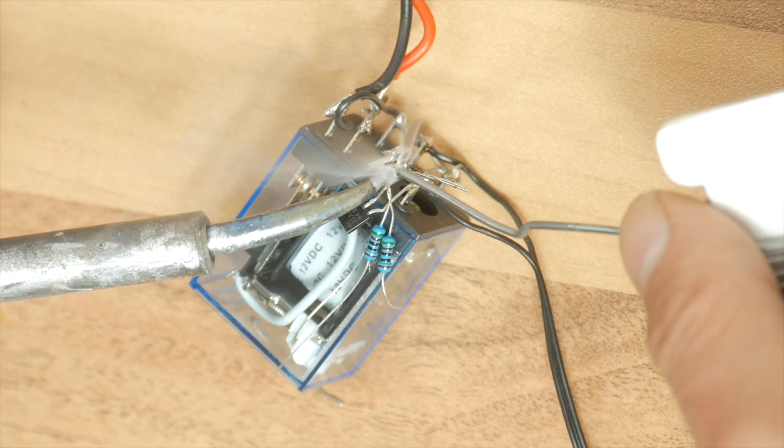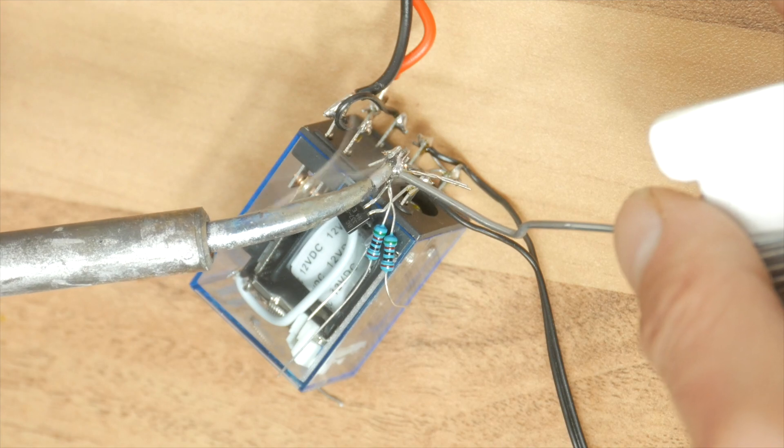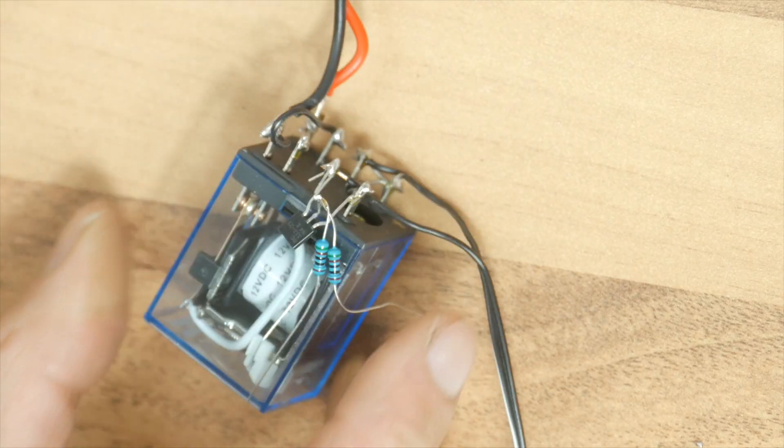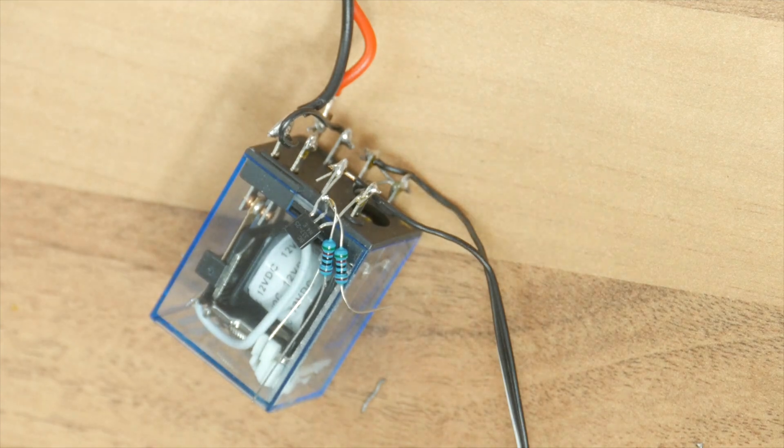I decided to use two resistors, one for each motion detector. The value doesn't really matter, mine are 510 ohms.